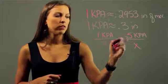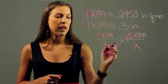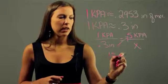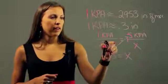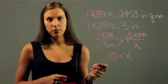So I'm going to multiply 0.3 times 5, and I get 0.15. And I multiply 1 times x, and I just get 1x. So that means that in 5 kPa, there would be 0.15 inches of mercury.